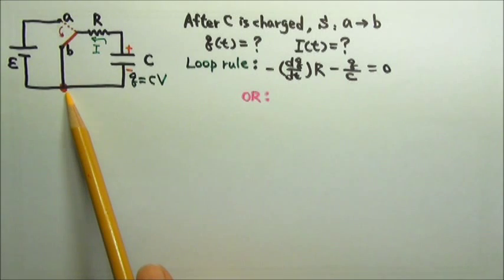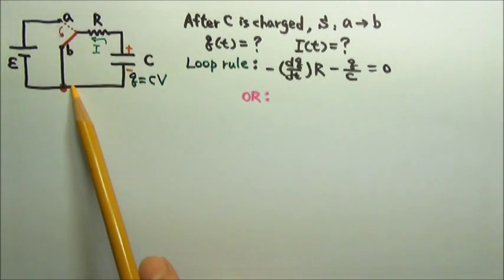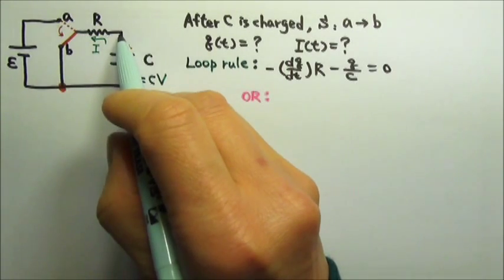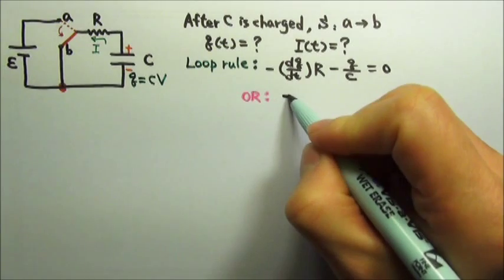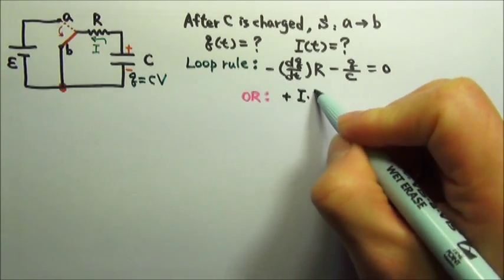So if I start from here and go clockwise to write my loop rule, when I go from here to there, I'm going against the current. So the potential should increase by I times R.